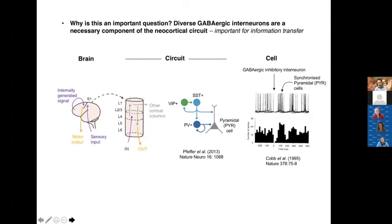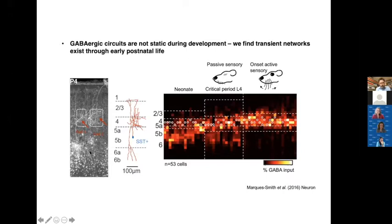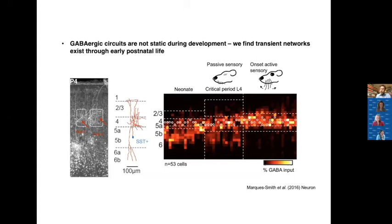A number of years ago, we published a paper — the work of Andre Marquis Smith — where we described a GABAergic circuit that is not static during development; we have a transient network. These morphologies show massive arborization of axons in the barrels of a postnatal day 4 somatosensory cortex, with collaterals going up to the marginal zone and down towards the subplate. What we have is a single interneuron innervating multiple levels in the developing circuit.